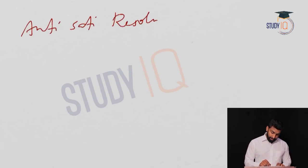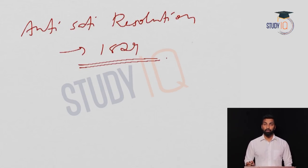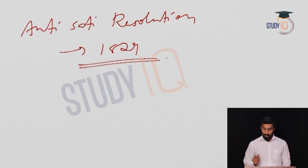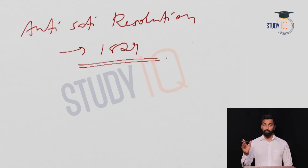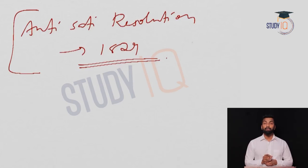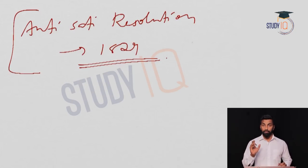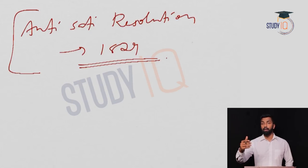The most important reform introduced by Lord William Bentinck is the Anti-Sati Resolution passed in 1829. Sati was practiced among the upper caste in North India, not South India. A female was forced to jump onto the funeral pyre of her husband after his death. Under the Anti-Sati Resolution, Sati was declared as culpable homicide not amounting to murder, with a maximum punishment of 10 years of rigorous imprisonment for those who instigate or compel the female to commit suicide.